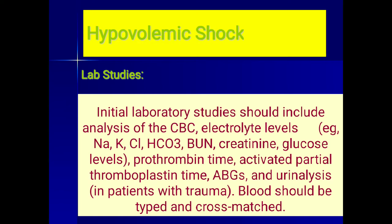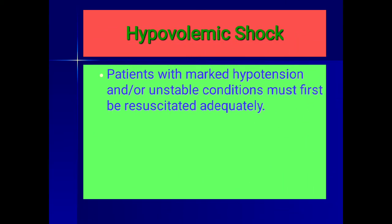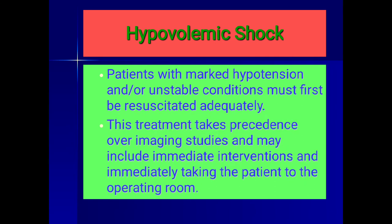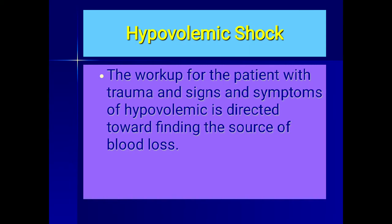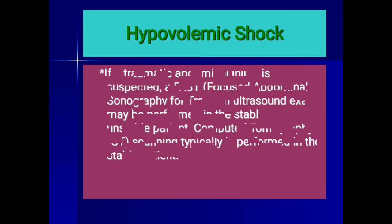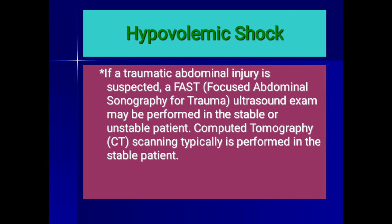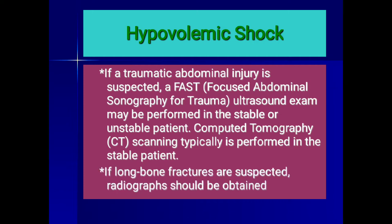Hypovolemic shock patients with marked hypotension or unstable conditions must be resuscitated first — this takes precedence over imaging studies and may require immediate surgical intervention. The workup for trauma with signs of hypovolemia is directed toward finding the source of blood loss. If abdominal injury is suspected, FAST (focused abdominal sonography for trauma) is performed in both stable and unstable patients; CT is typically performed only in the stable patient. If long bone fractures are suspected, x-rays should be obtained and the bone stabilized.